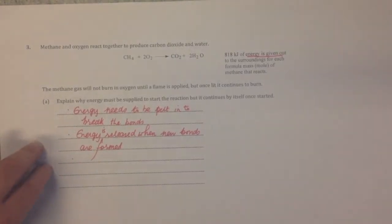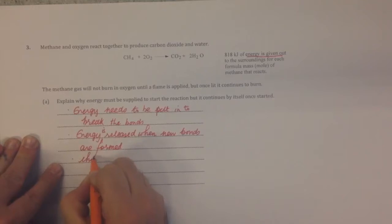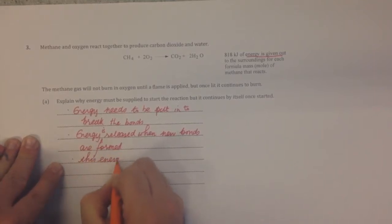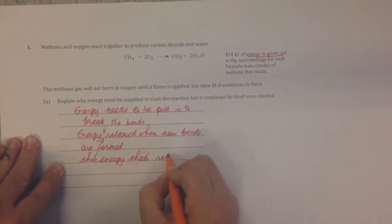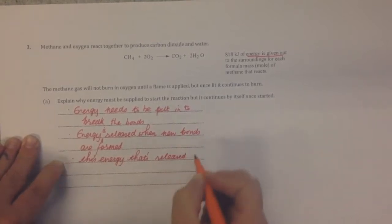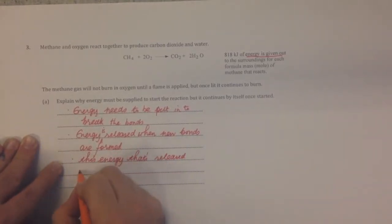What does that mean? Because energy is released when new bonds are formed, once you start this off, the energy that's released—because it's exothermic—breaks more bonds.